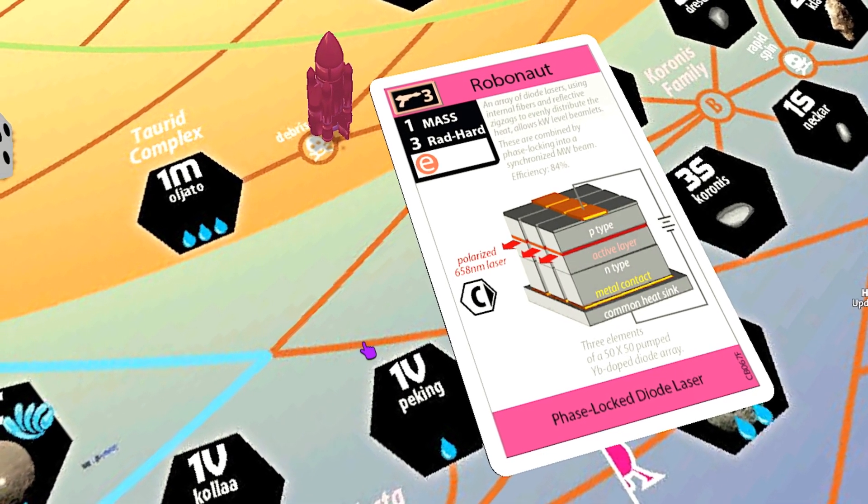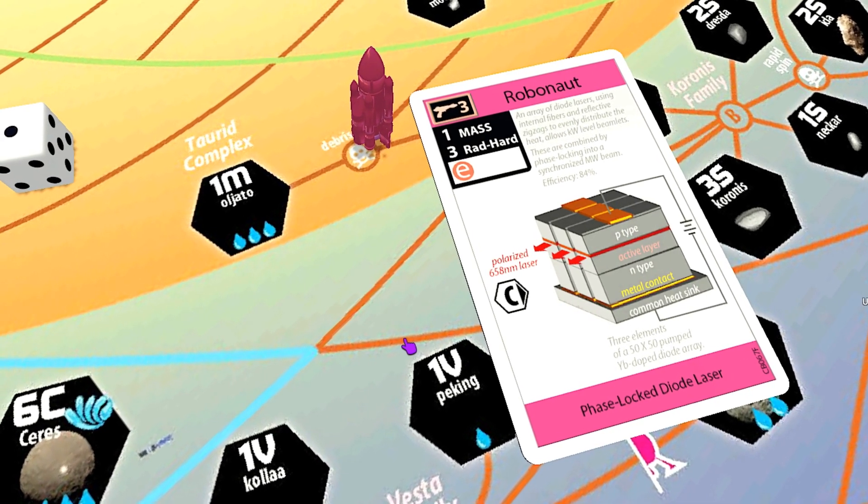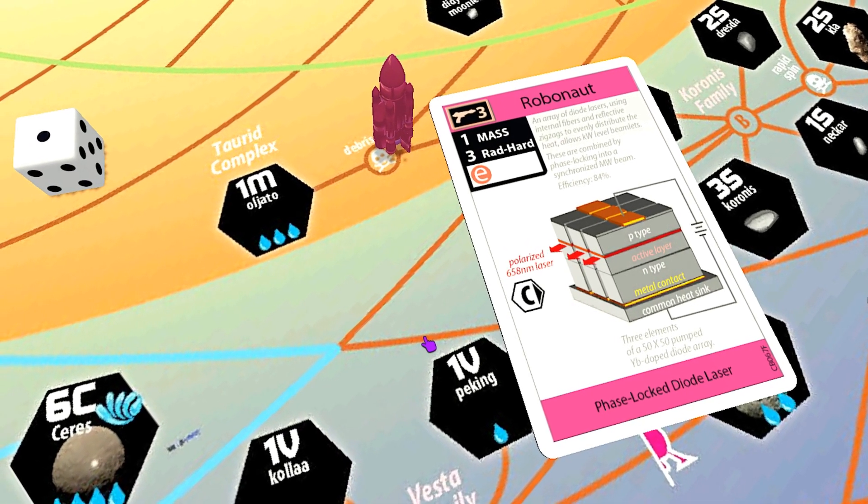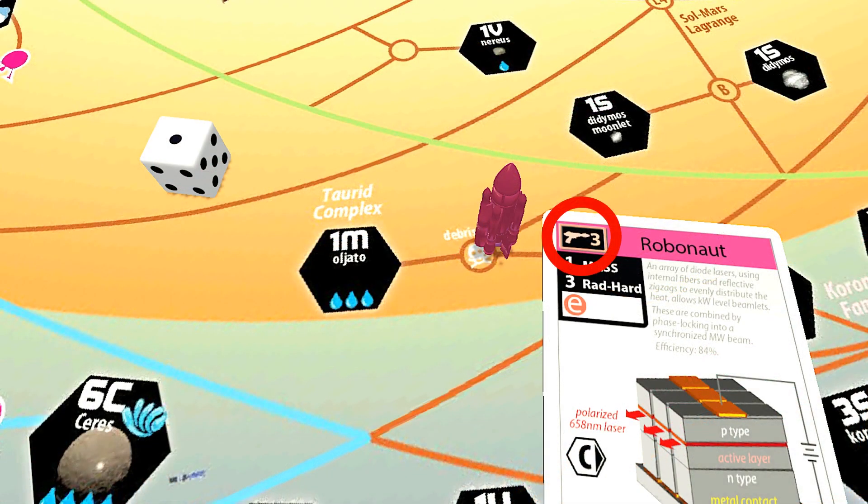In order to prospect—as in refueling on a site—your card must have an ISRU number less than or equal to the hydration of the site. My robonaut has an ISRU number of three—not great, but it is sufficient to prospect the Thyreoid Complex. The great thing about my robonaut is that it has a ray gun symbol, which means that I can prospect at a distance of up to one space.